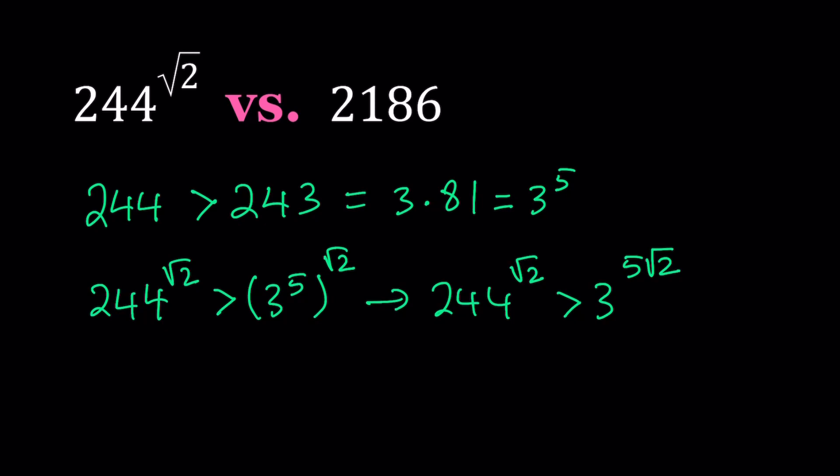We were able to compare our number, one of the numbers, to a power of 3. So if you can do the same thing for 2,186, then we're going to be in good shape so that hopefully we can put those together. The goal is to find a common base.